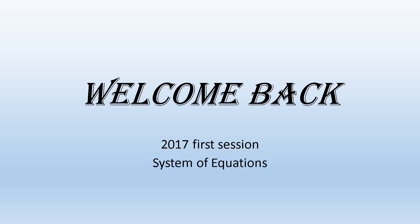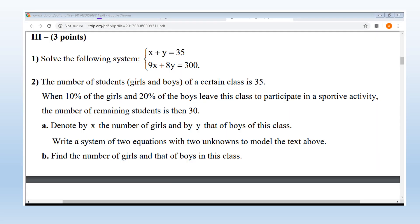This is from the official exam of 2017, first session. We have a system of equations — two equations in two unknowns. The two variables are X and Y. The first equation is X plus Y equal 35, and the second equation is 9X plus 8Y equal 300. Part 1 says: solve the following system.